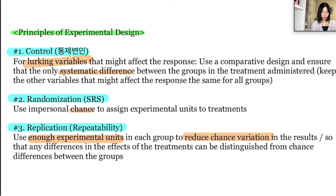So control, randomization, and replication are the three principles of experimental design. That's the end of this video — thanks for watching, please subscribe to our channel and like this video. See you in the next video!